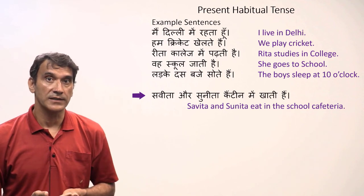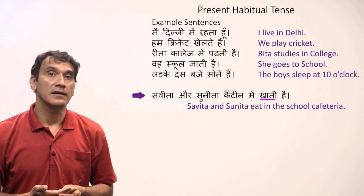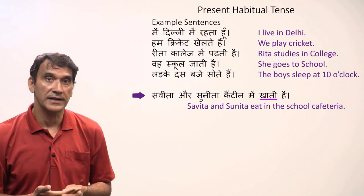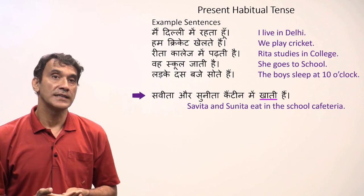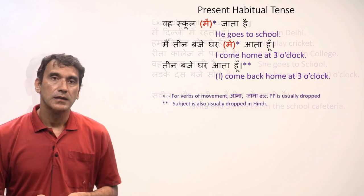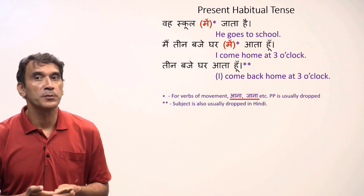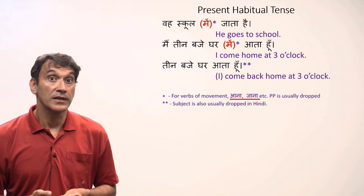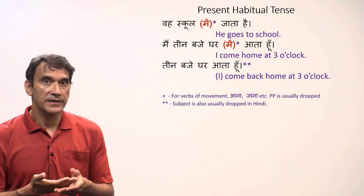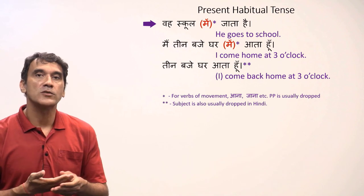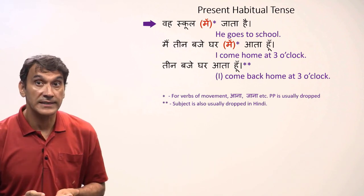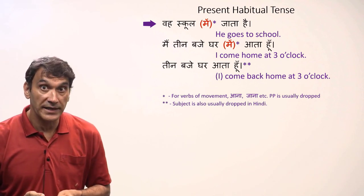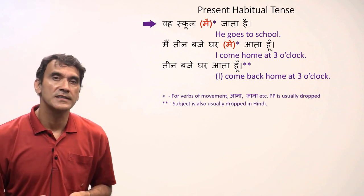In the last example, 'Savita aur Sunita canteen mein khaati hain' — Savita and Sunita eat in the school cafeteria. Since Savita and Sunita are girls, the sentence takes the feminine plural form 'khaati hain.' This is a unique feature in Hindi: for verbs of motion such as 'aana' (come), 'jaana' (go), and 'pahunchna' (arrive), the postposition is usually dropped. For example, 'woh school jaati hai' — she goes to school — the postposition 'mein' is dropped. It is not incorrect to include it, but there is a strong tendency to drop it.